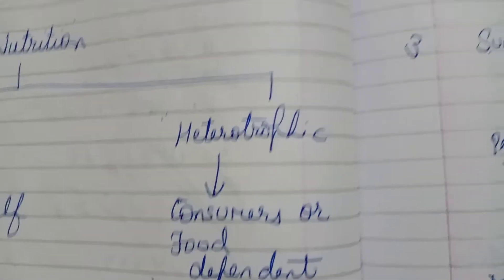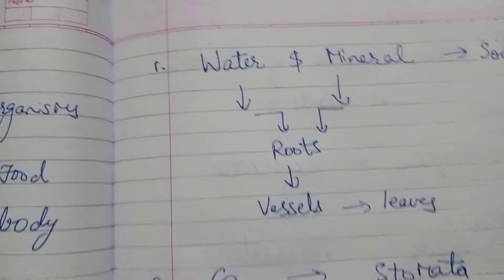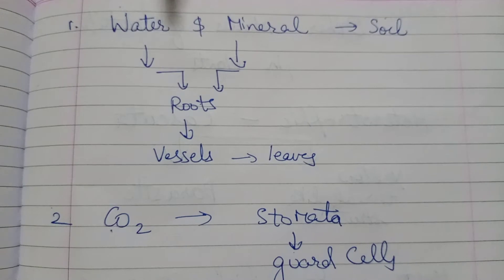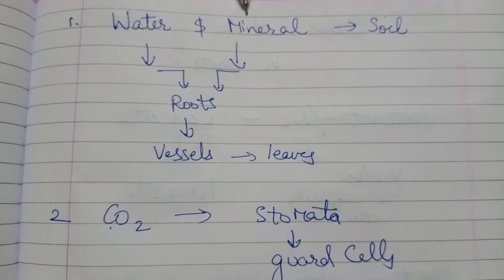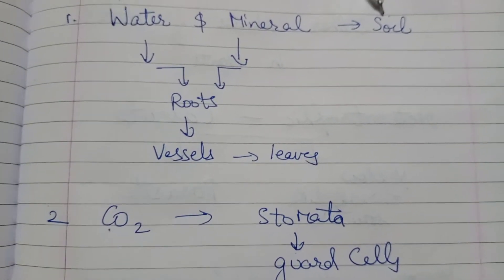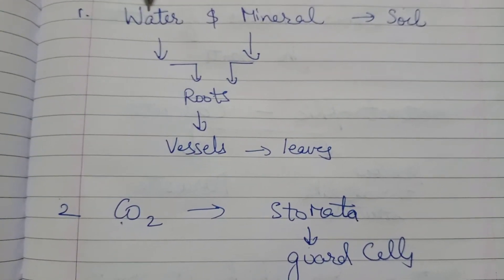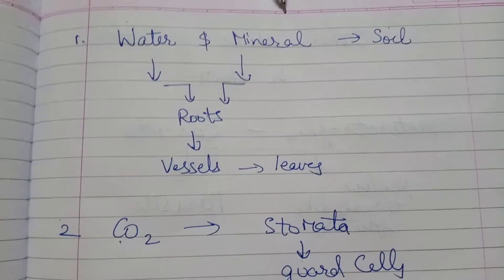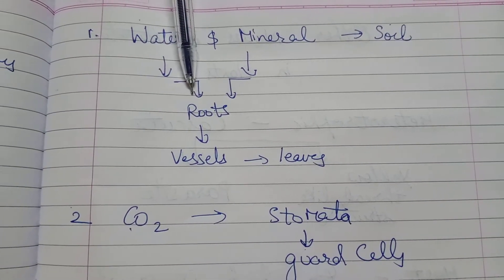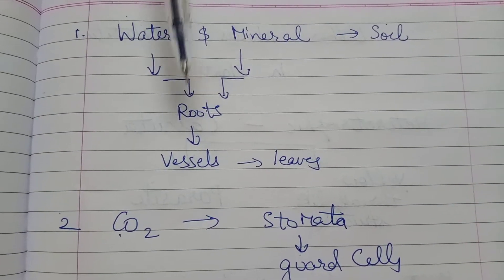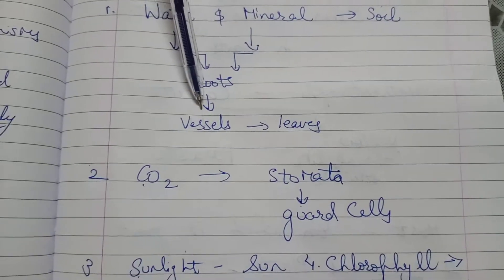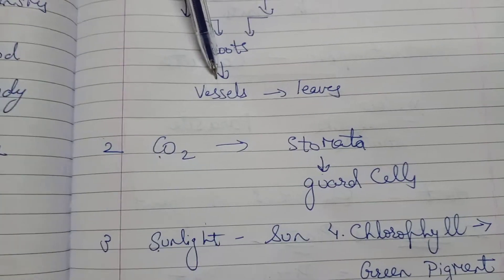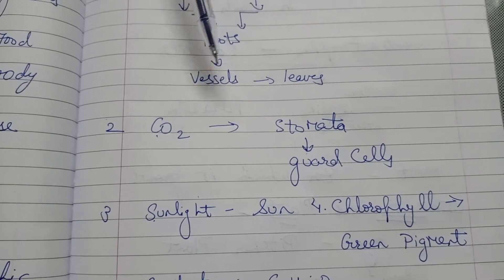Now comes the raw materials which are essential in the process of photosynthesis. First of all, water and minerals — their location is soil. Water and minerals are present in the soil, absorbed by the roots, and then the roots send them to the leaves with the help of vessels. Vessels are xylem and phloem, which you will study in further chapters.